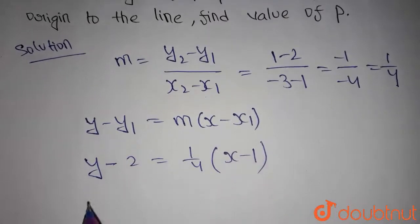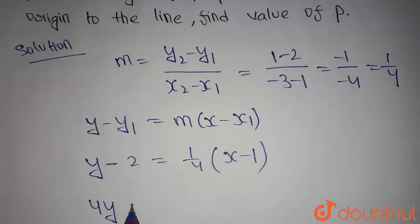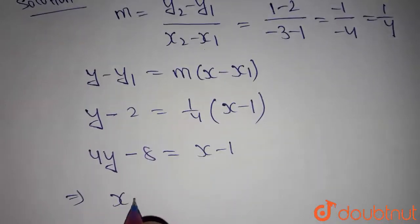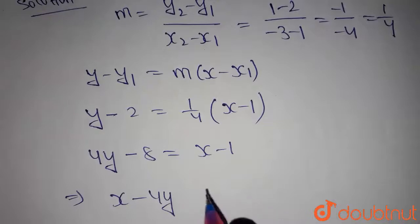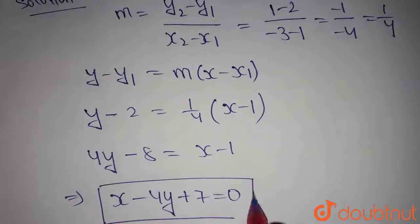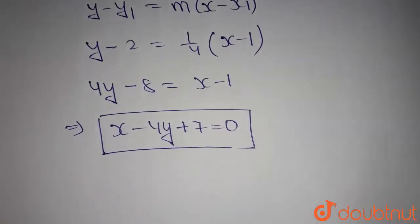By further solving this, we get x minus 4y plus 7 is equals to 0. This is the line equation passing through the two given points.